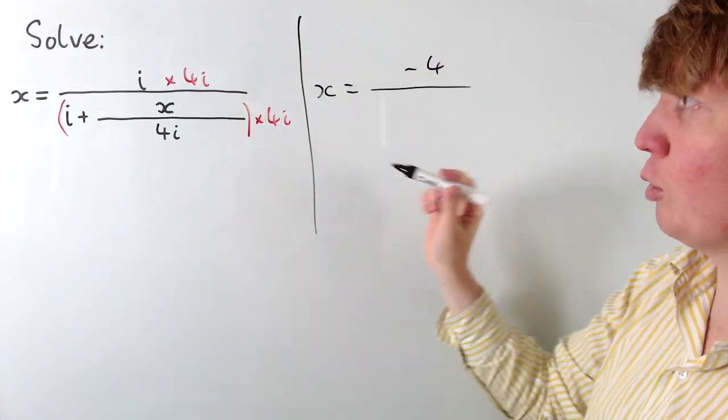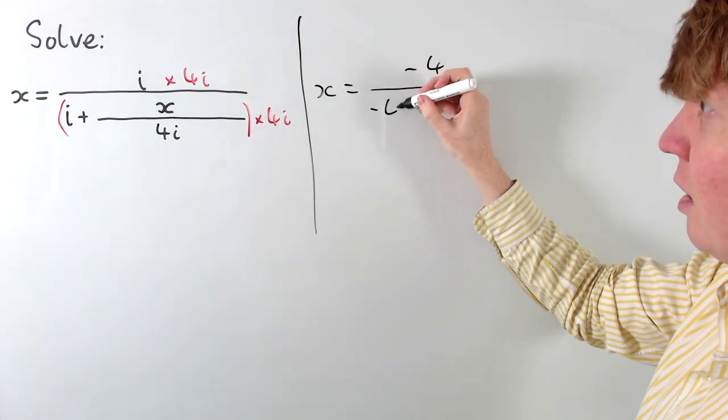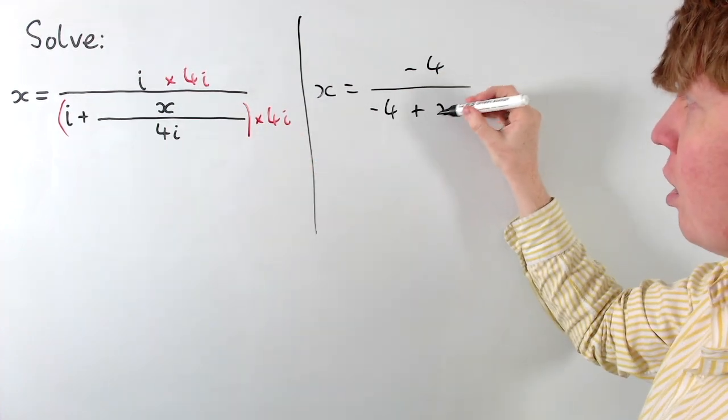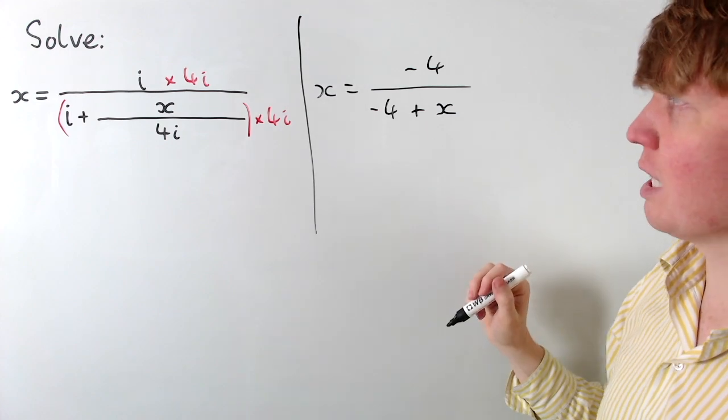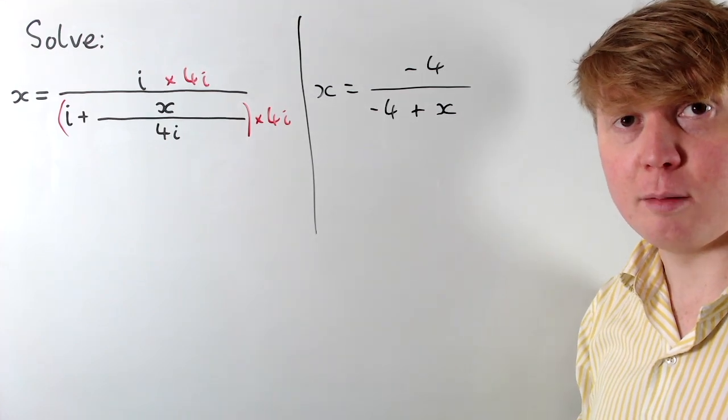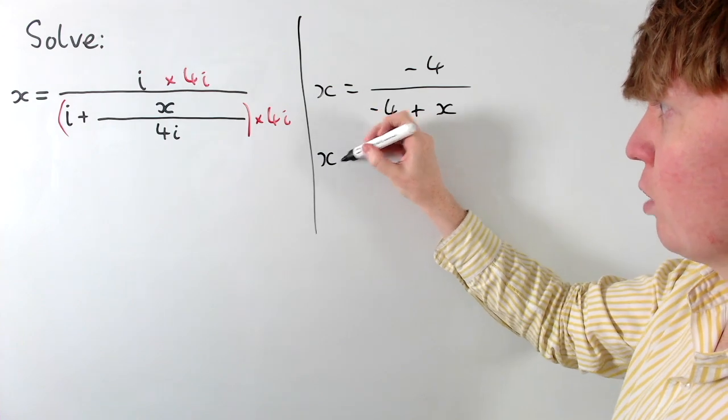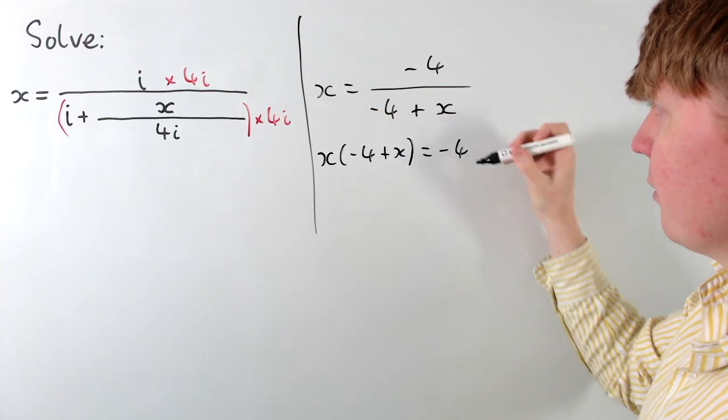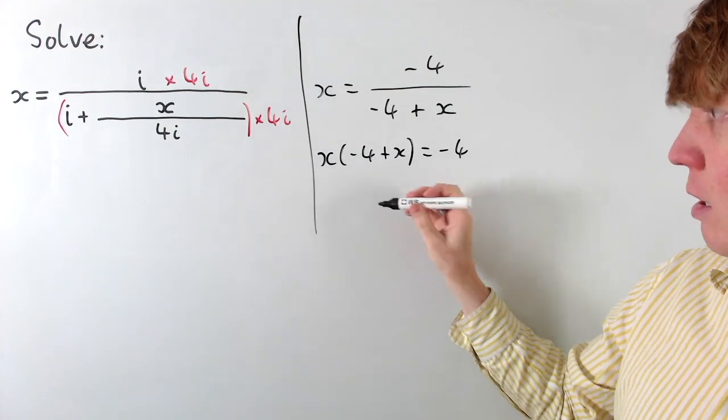And similarly here, i times 4i gives us another negative 4. And then x over 4i times 4i just gives us a plus x, so the 4i's cancel there. So then we can multiply on both sides now by negative 4 plus x. So we'll get x times negative 4 plus x equals just negative 4. And then expanding the brackets,